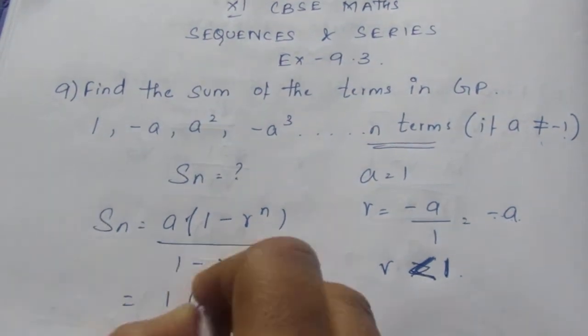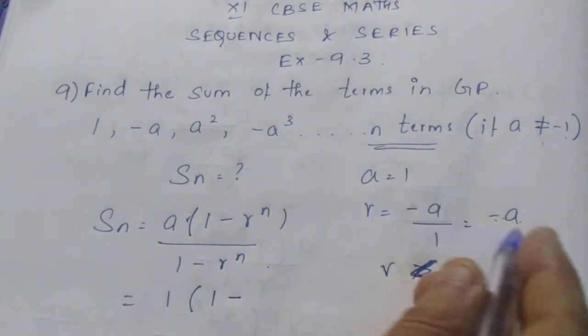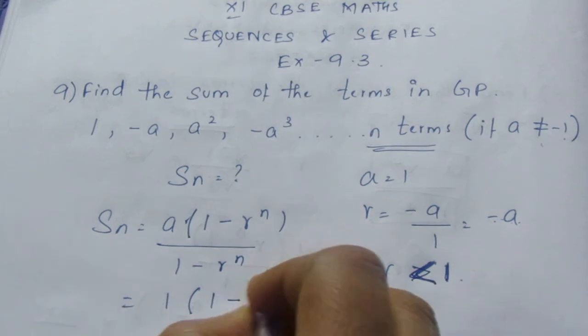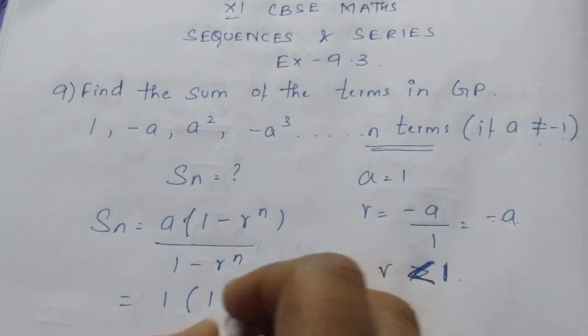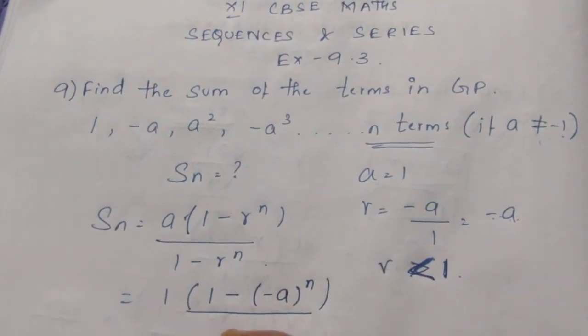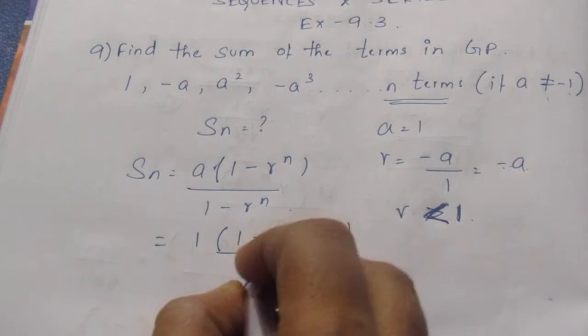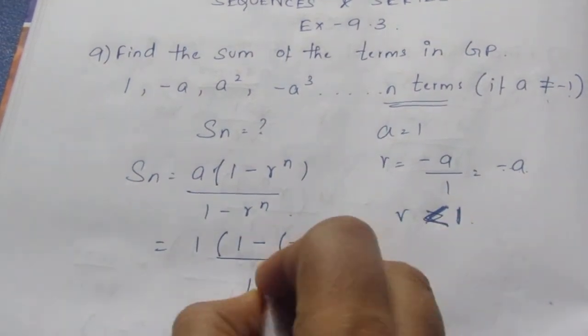Here a is 1 because the first value is 1. So, 1 × [1 - r, here is -a, the whole power n] by [1 - (-a), minus of minus will become plus a].